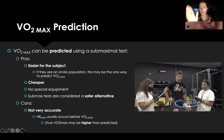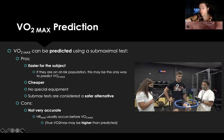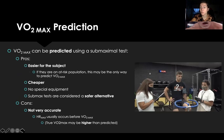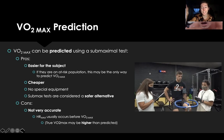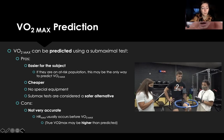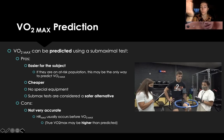VO2 max prediction is what we're covering in this lab. You can predict VO2 max without actually doing a VO2 max test by using a submaximal test. Pros: it's easier for the subject, safer for at-risk populations like those with heart conditions or the elderly, and cheaper since you don't need fancy equipment. Cons: it's not as accurate as the direct measurement, and your VO2 max may actually be higher than what the test predicts.